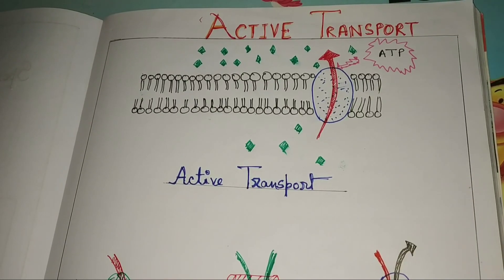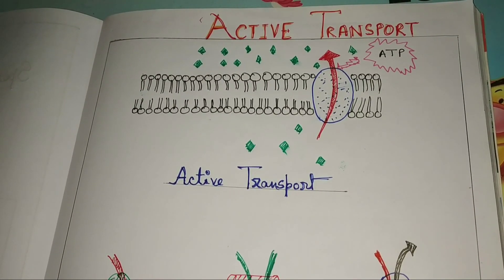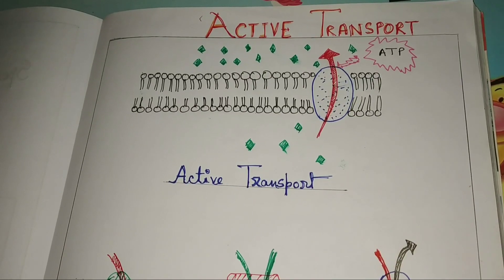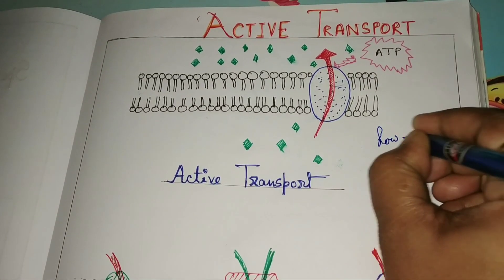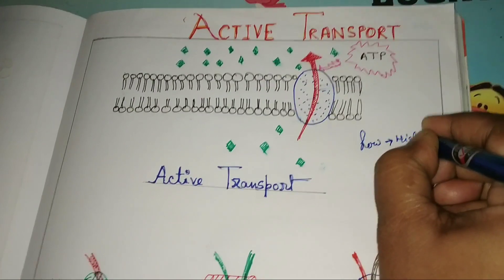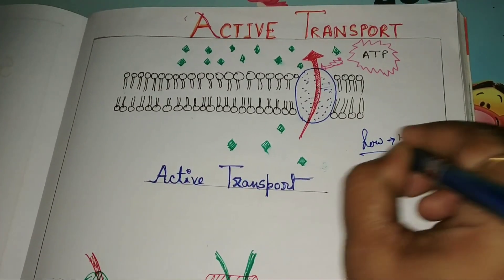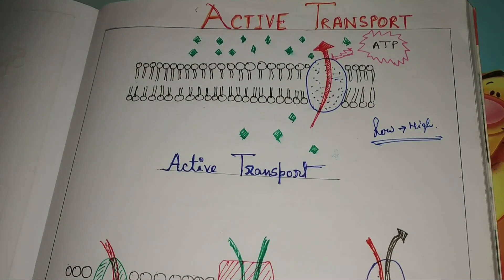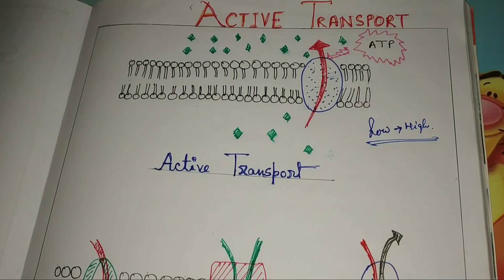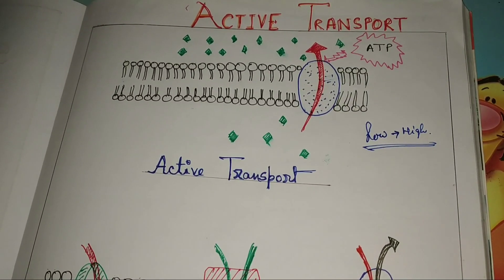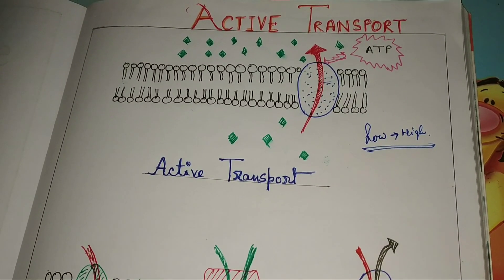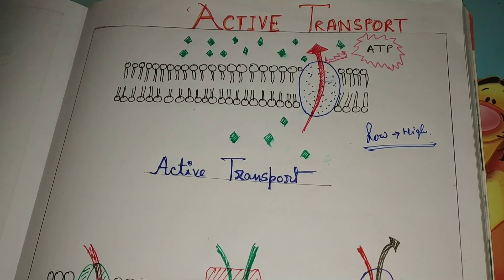Let me start. What is active transport? When molecules need to be passed from low concentration to high concentration — from low to high concentration — they need some energy. Without that energy, they are not able to penetrate the membrane. This is known as active transport.